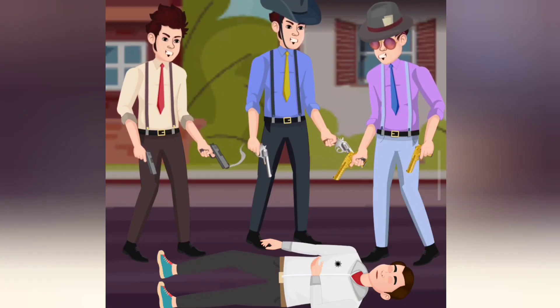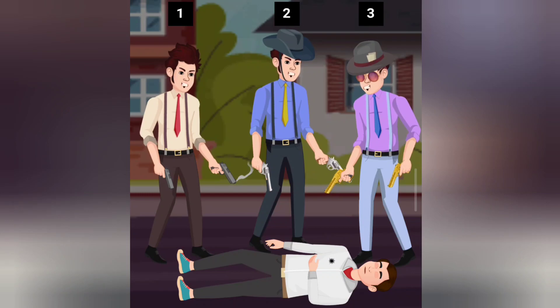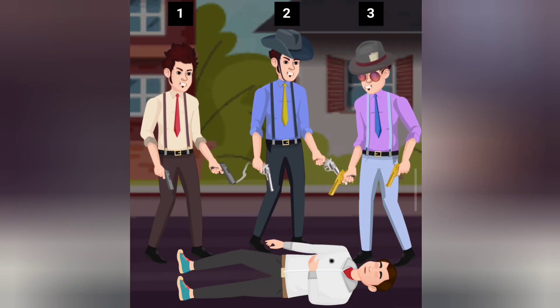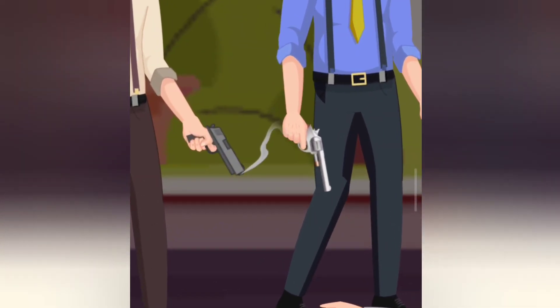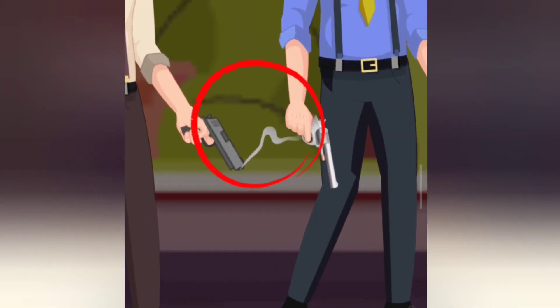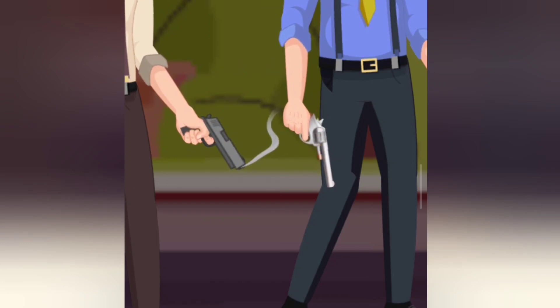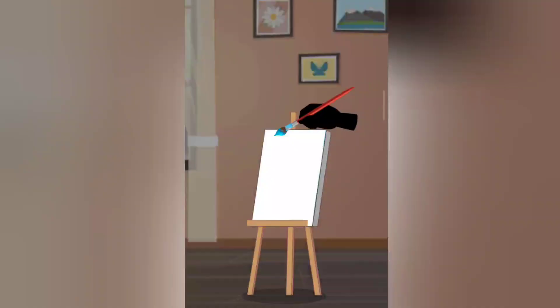Can you guess which man killed him? 1, 2, 3 — Option 1 is the murderer. He is the one who fired the bullet because smoke can be seen coming out of his gun.